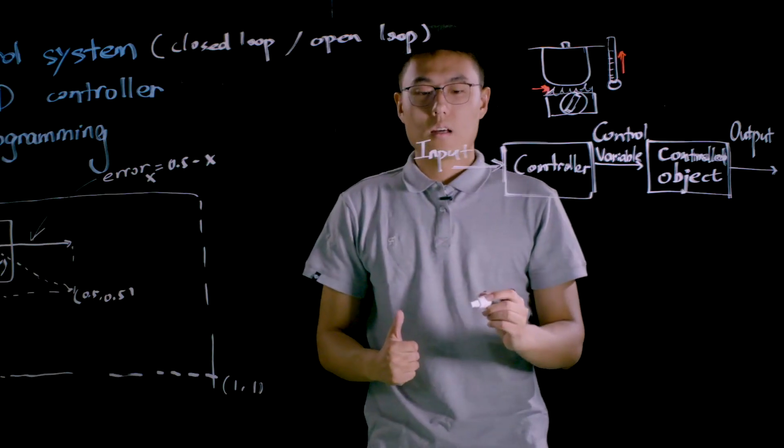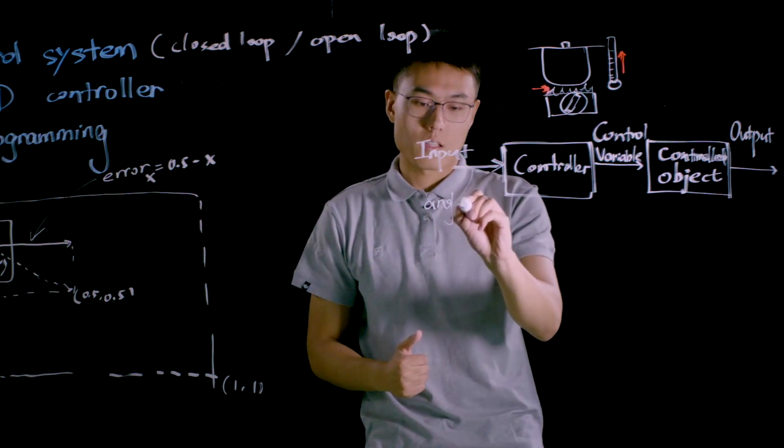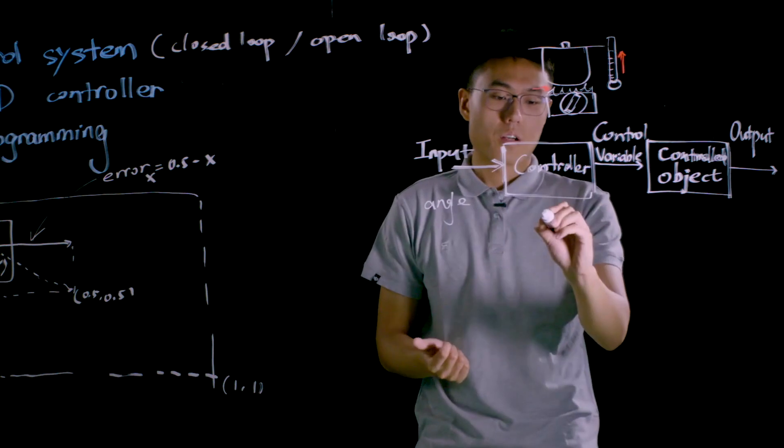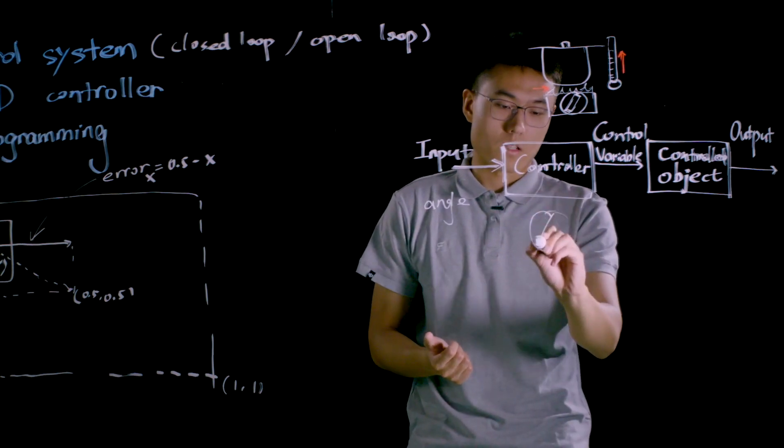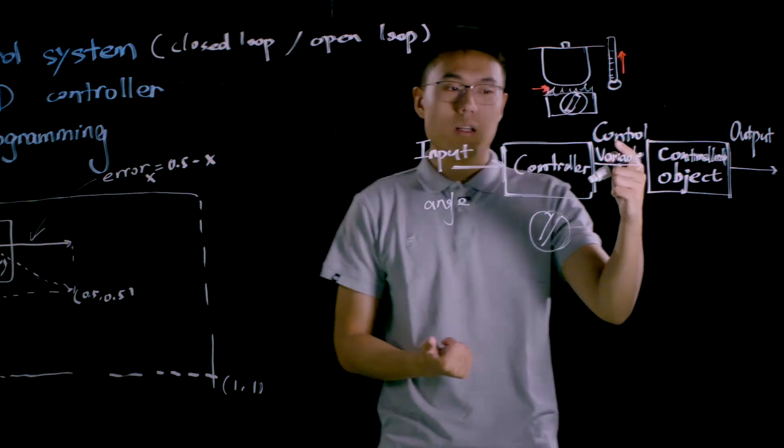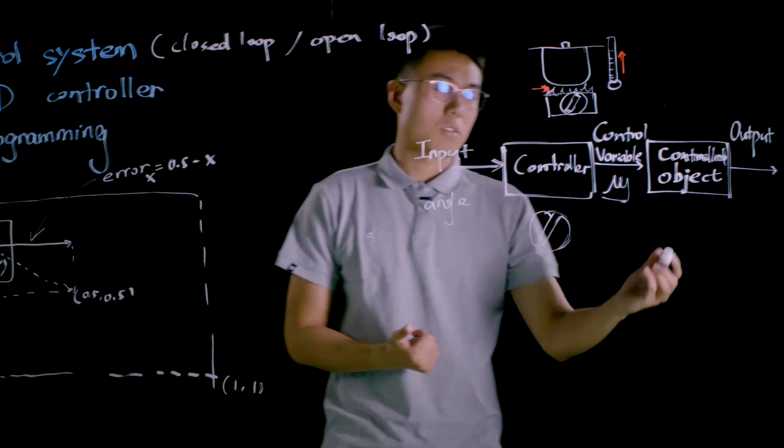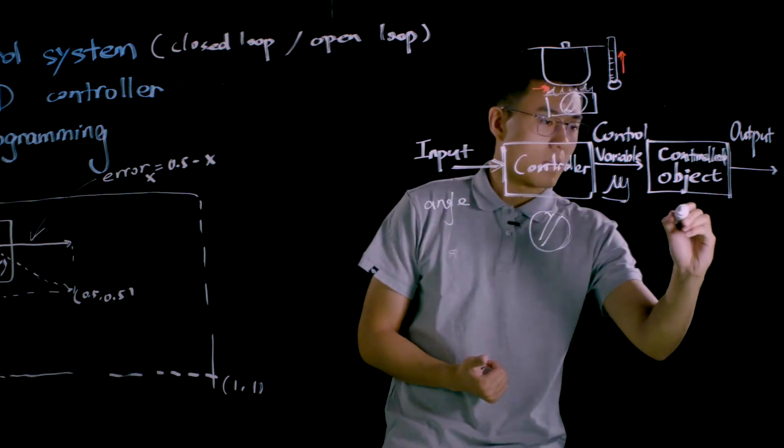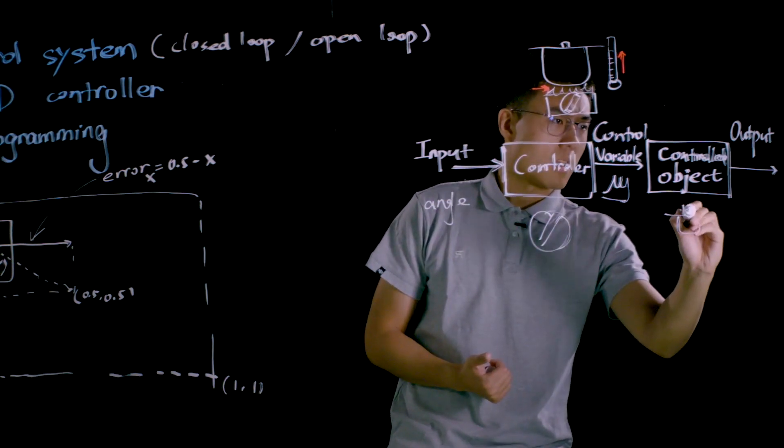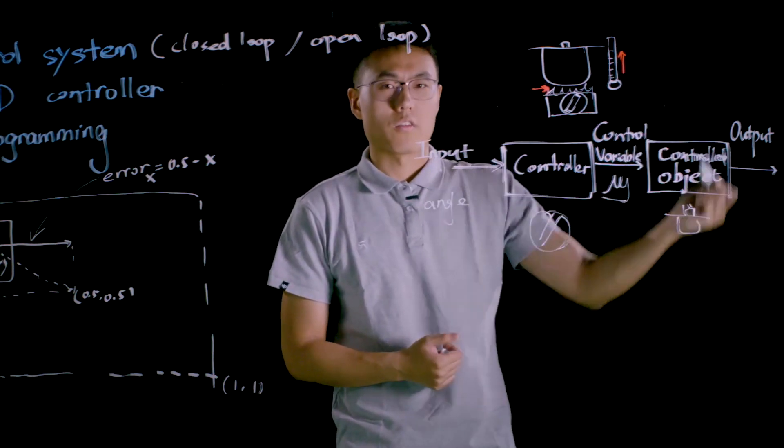So in this example, the input is the angle of rotation of the valve, and obviously the controller is the valve itself. The control variable is the flame, and the control object is the pot. And the final output is the temperature of the pot.